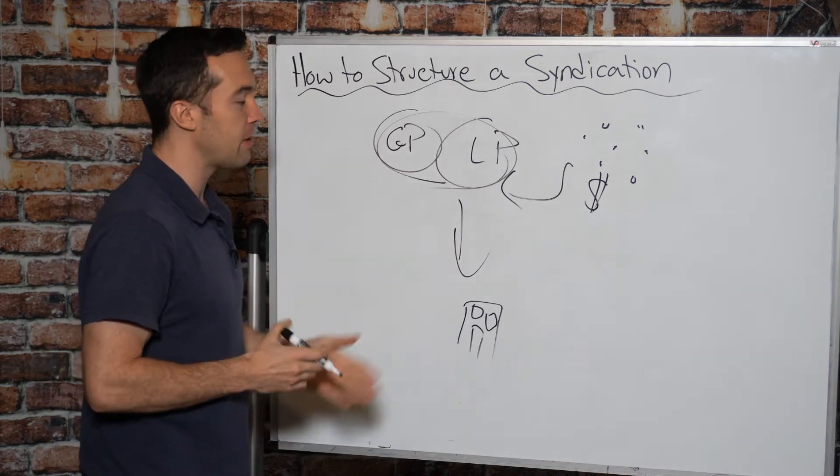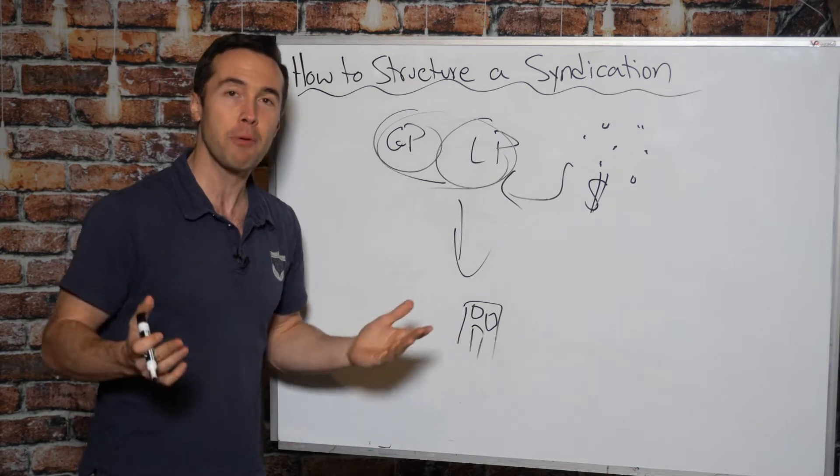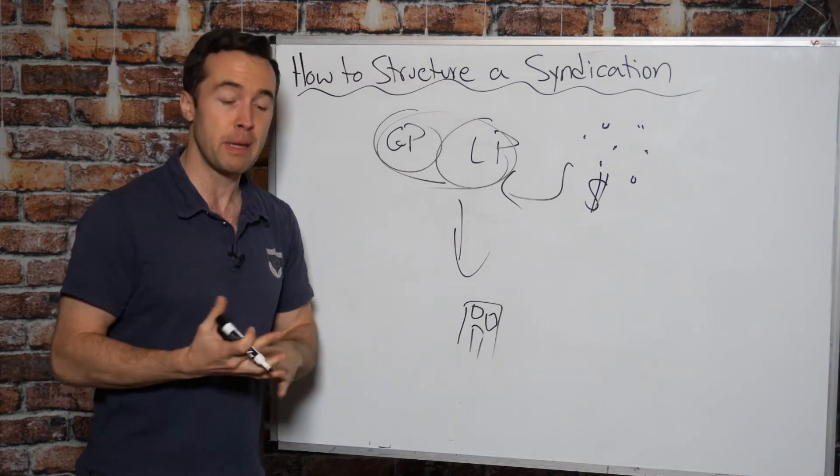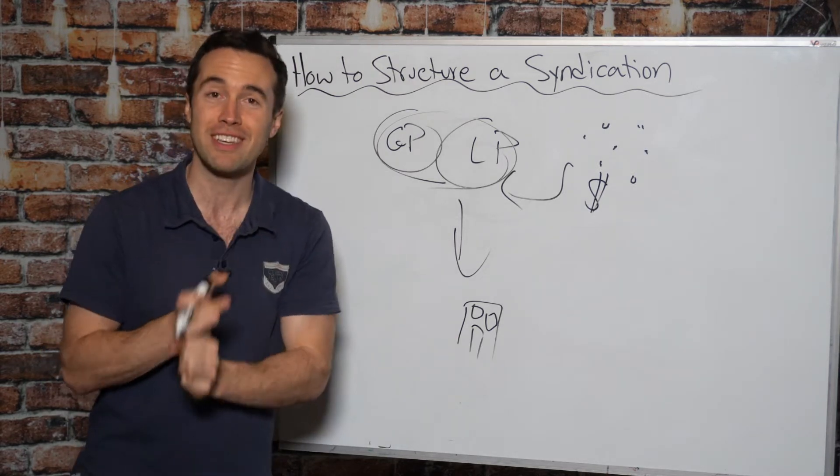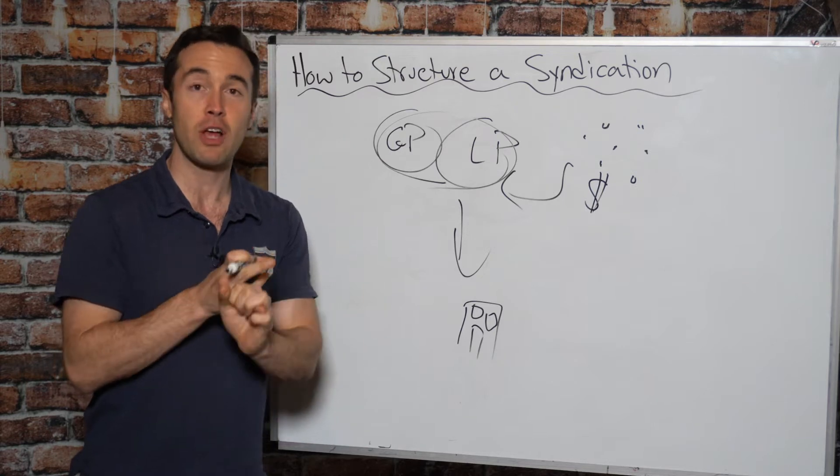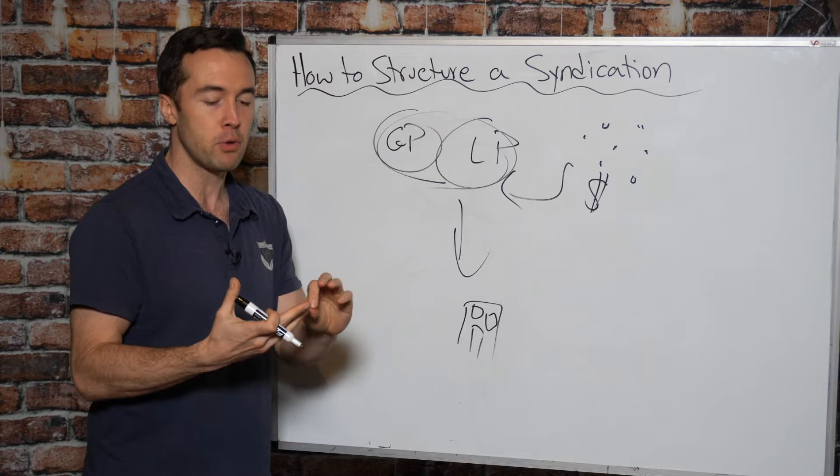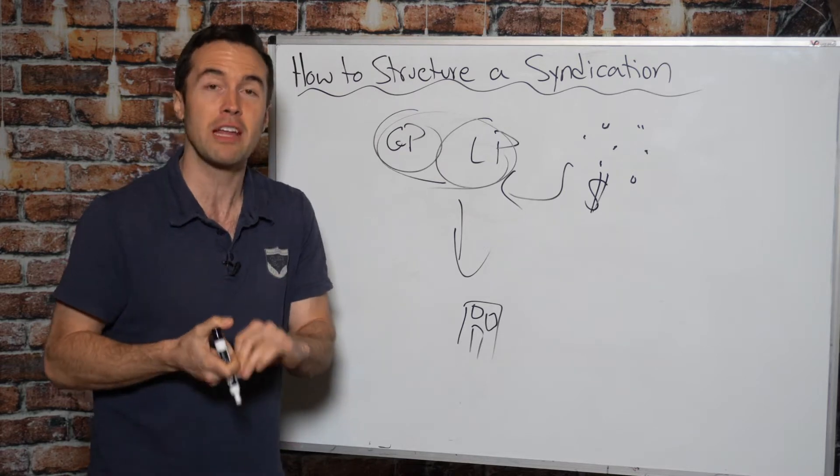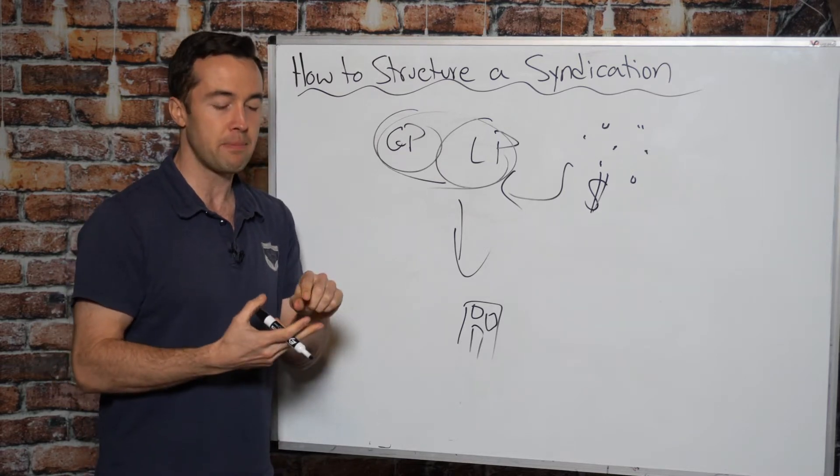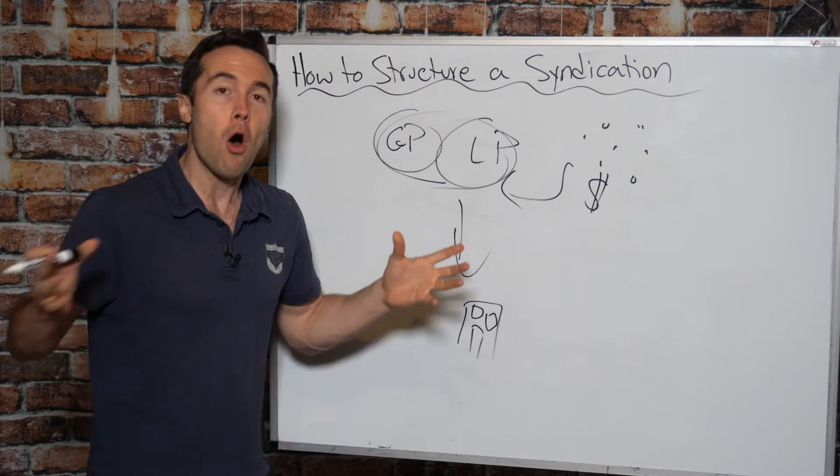So if we're dealing with a 200 unit property, we're going to need a number of different people. We'll need people who specialize in raising capital. We'll need people who specialize in construction if there's a big renovation component there. We'll need people who specialize in the market, the boots on the ground. We also need people who can manage the property. All these people,